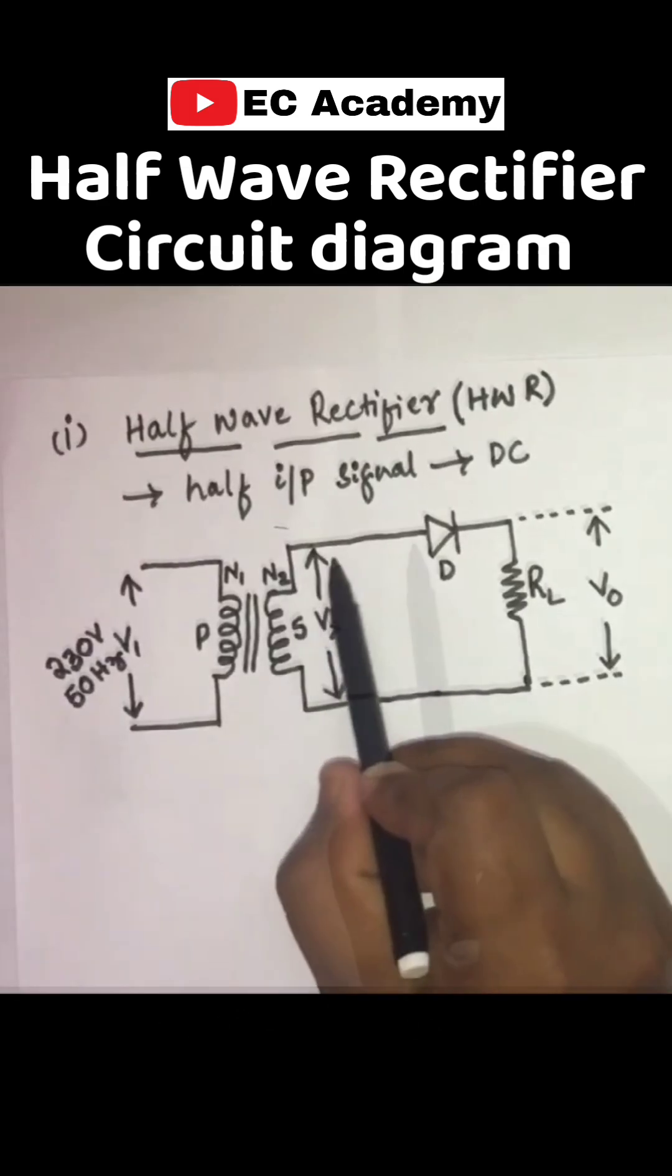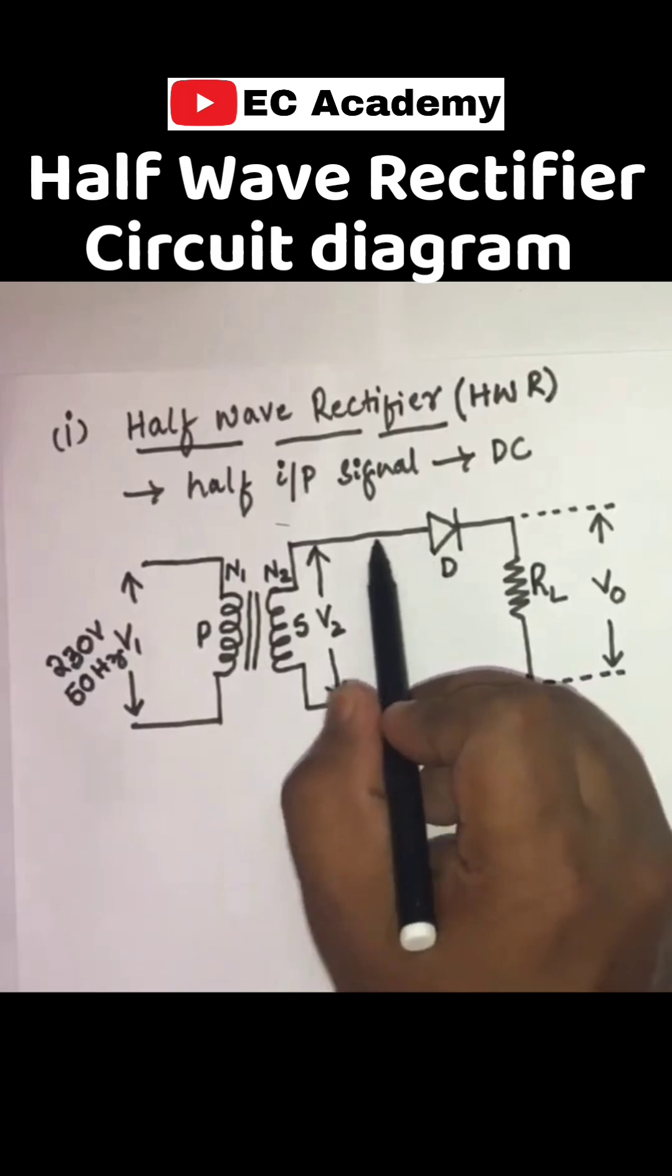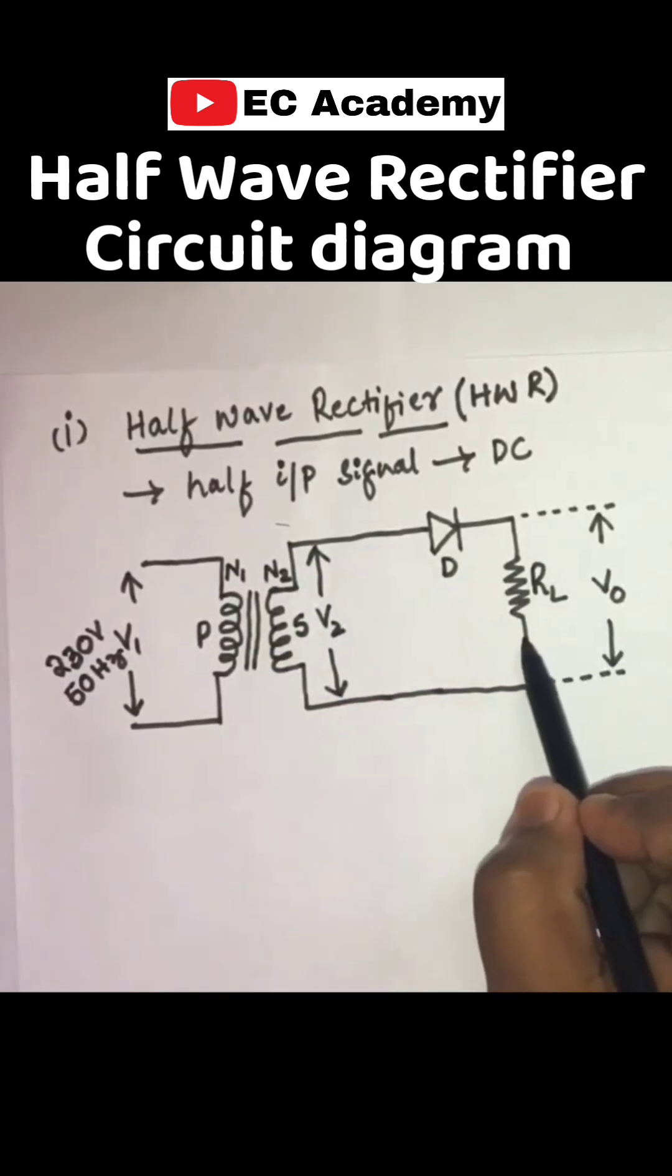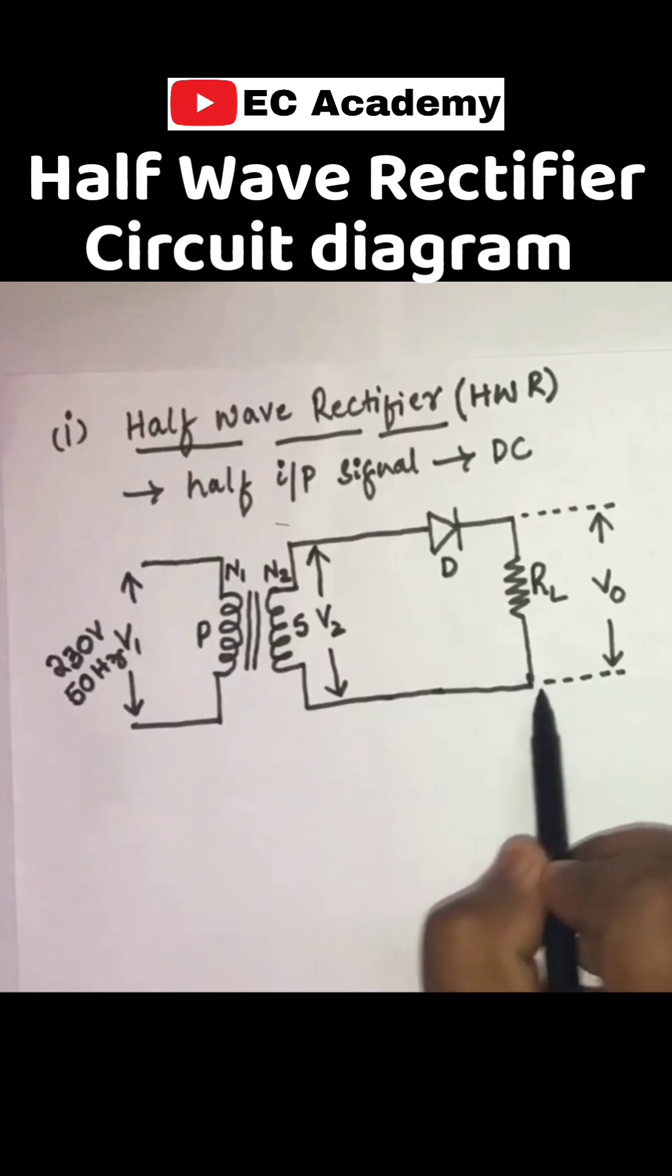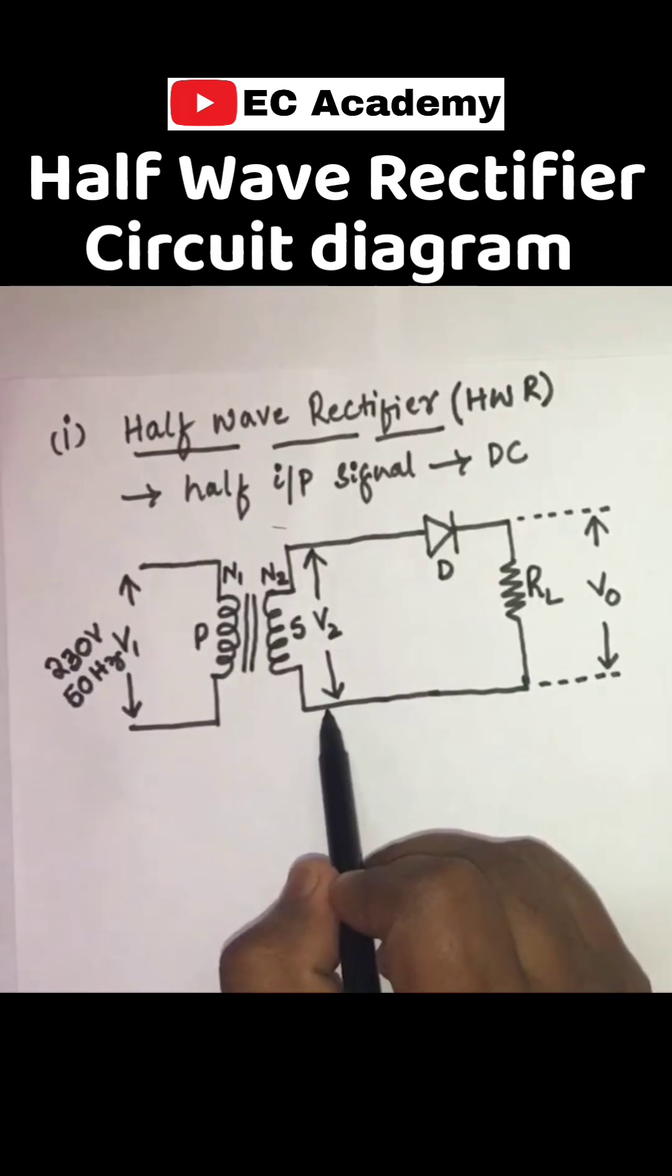A diode is connected in series with the load resistance. You can see the anode terminal of the diode is connected to one terminal of the secondary of the transformer and the other terminal of the load resistance is connected to the second terminal of the secondary of the transformer.